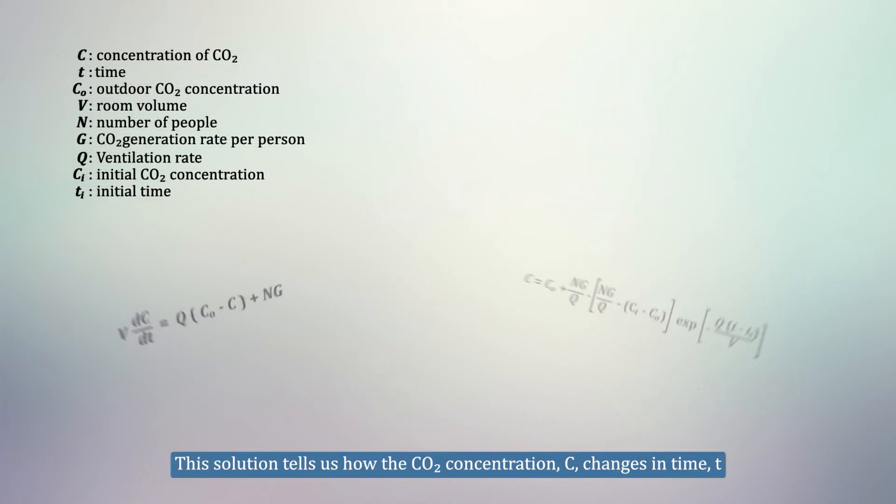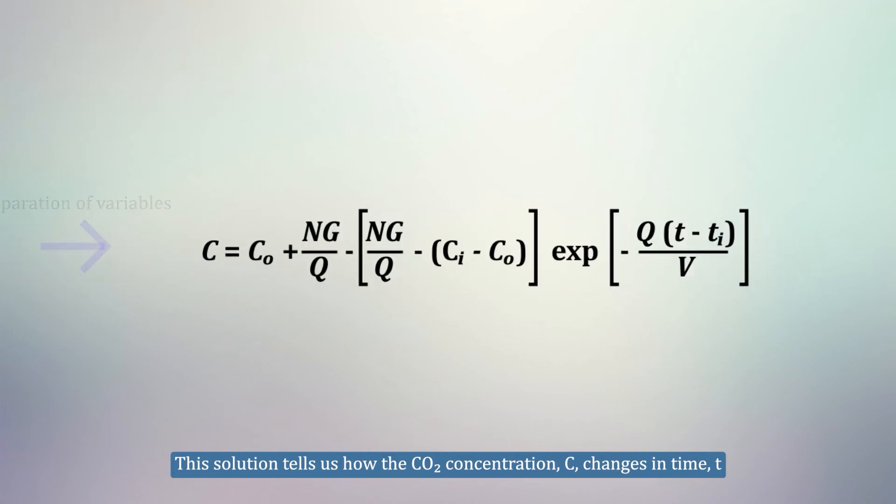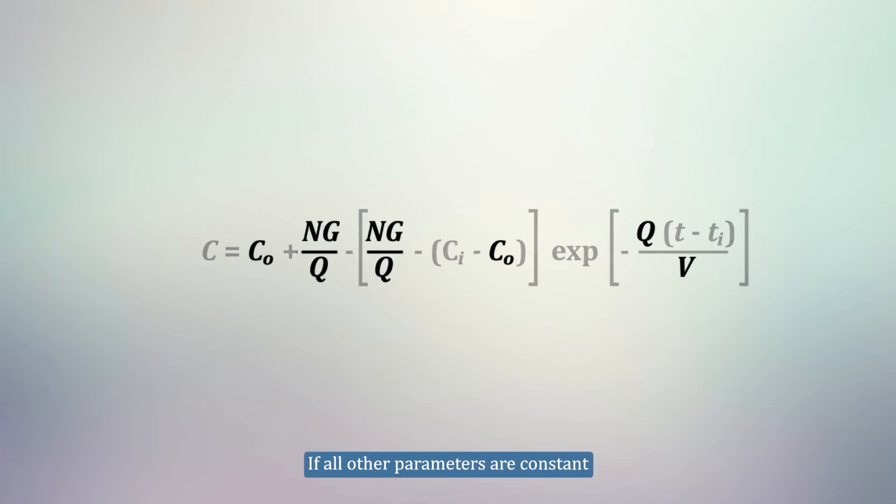This solution tells us how the CO2 concentration, C, changes in time, T, for a given initial concentration, Ci, at initial time, Ti, if all other parameters are constant.